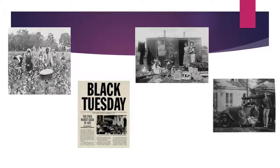Primarily a rural state, Georgia was suffering through one of the worst droughts in its history. Additionally, a tiny insect called the boll weevil was devastating Georgia's most important crop, cotton. While Georgia was suffering through a mini-depression during the 1920s,